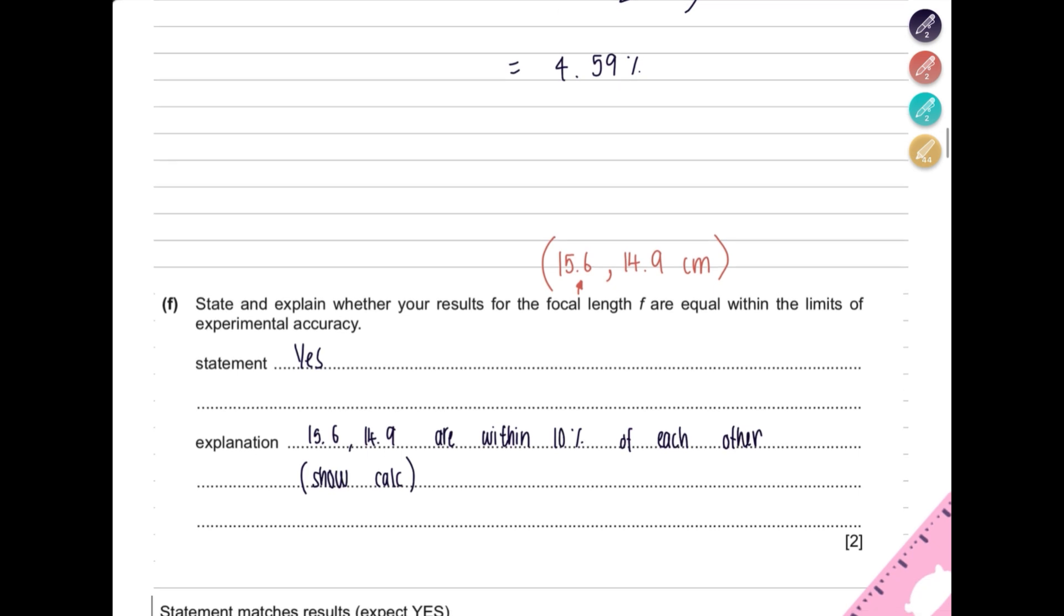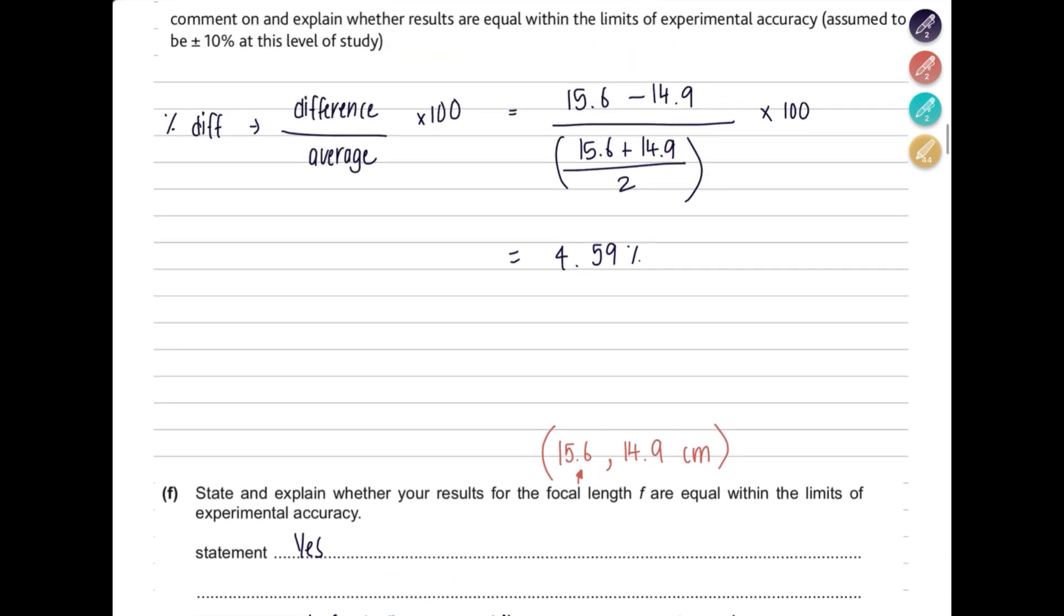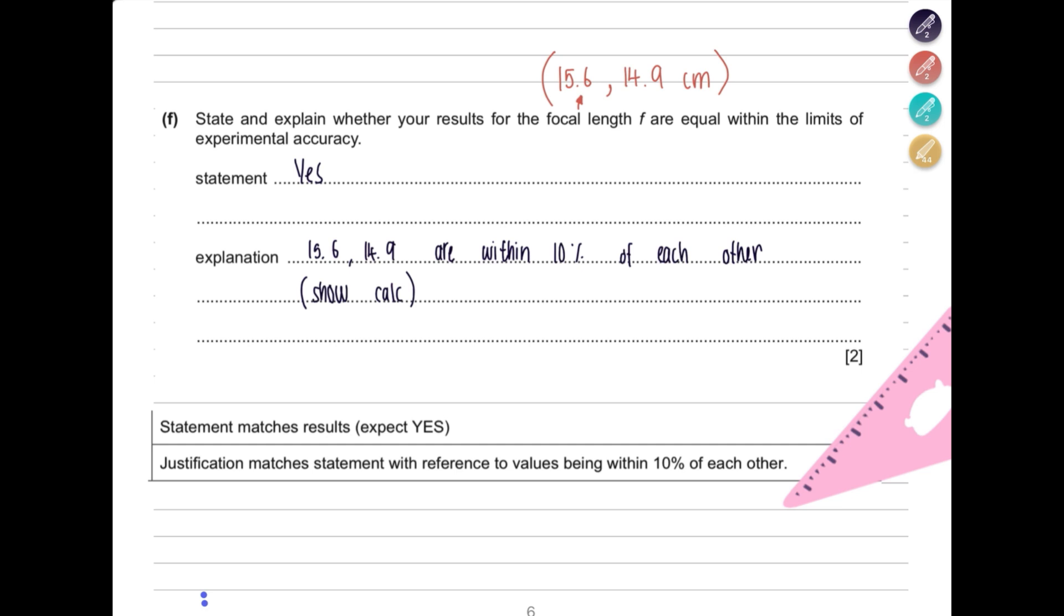So you will say yes they are, because 15.6 and 14.9 are within 10 percent of each other, and then you will show your calculation which is this one. This is the answer in the marking scheme: yes, because your justification is your calculation with reference to values being within 10 percent of each other.